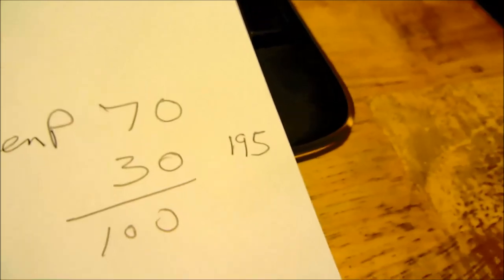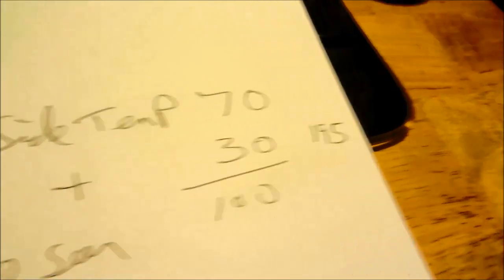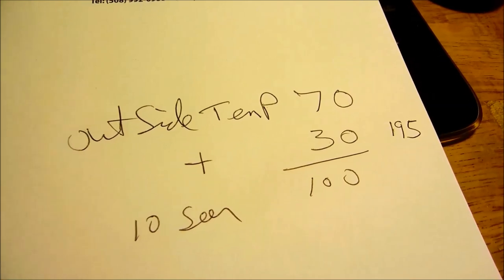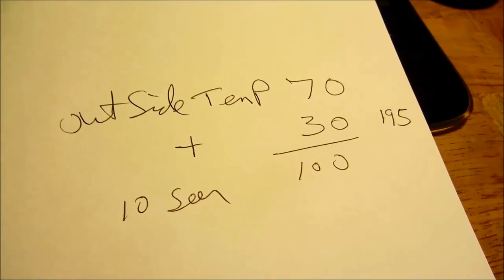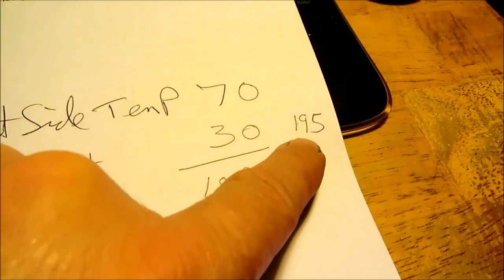Then you go over to PSI, it's 195. So the head pressure on a 70 degree day on a 10 SEER unit should be more or less 195.